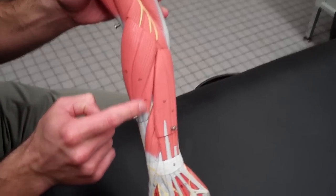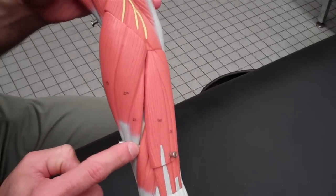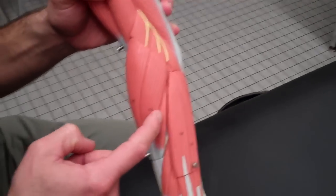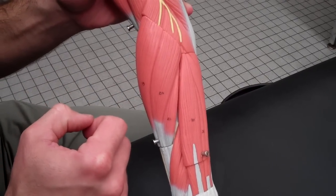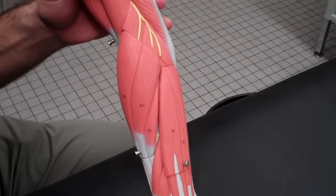This one right next to it here is your extensor carpi radialis brevis. This is the shorter of the two, starting here on the lateral forearm, running down to the carpals.